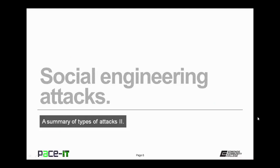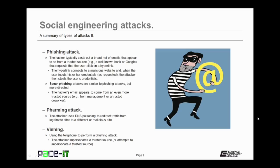Now let's move on to some common social engineering attacks. First up is the phishing attack. The hacker typically casts out a broad net of emails that appear to be from a trusted source, such as a well-known bank or a company like Google. These emails request that a user click on a hyperlink. The hyperlink connects to a malicious website that looks similar to the trusted website, and when the user inputs his or her credentials as requested, the attacker steals them, ending up with valid credentials they can use to perform fraud.